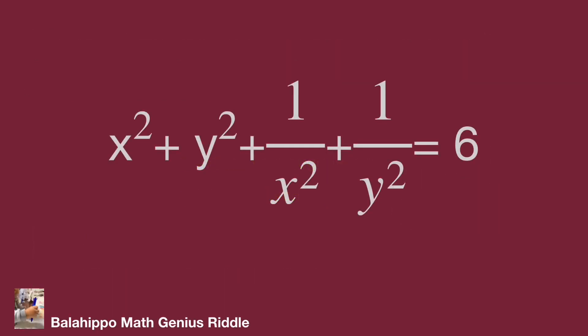It's an interesting given equation: x squared plus y squared plus 1 over x squared plus 1 over y squared equals 6. We have x squared and 1 over x squared, and y squared and 1 over y squared in the equation. It seems difficult to solve.